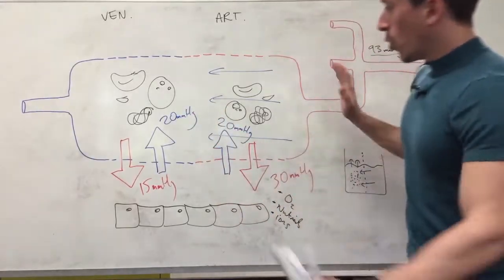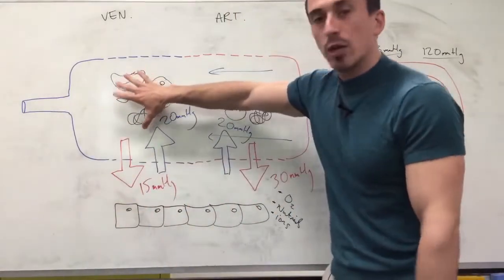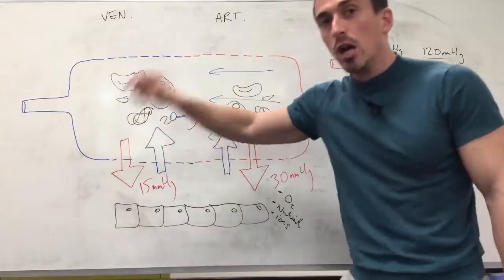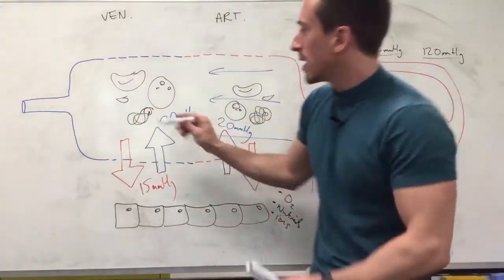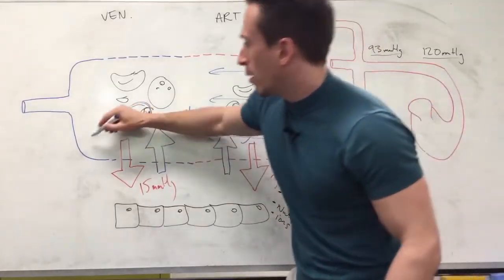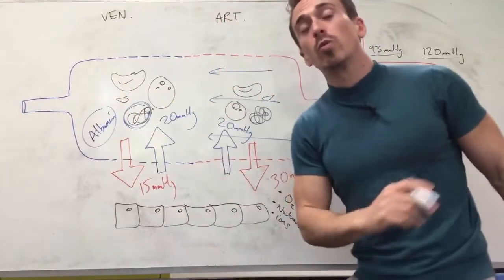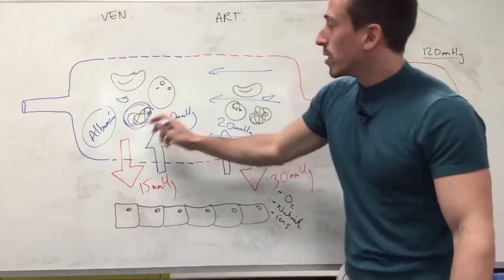Now let's have a look who's winning on the venous end. The pull in is winning and again this is called the osmotic or colloid osmotic pressure. Colloid means protein because the main pulling force here are the proteins in the blood that we term albumin, made by the liver.